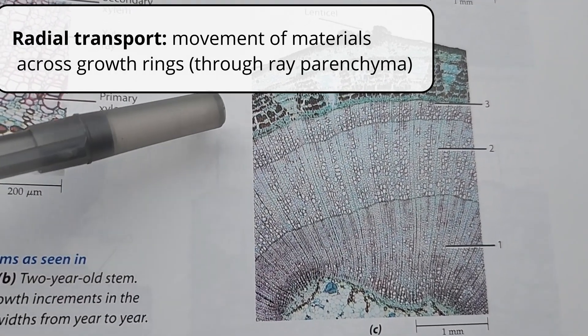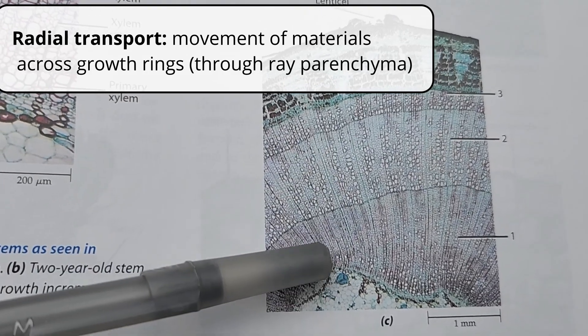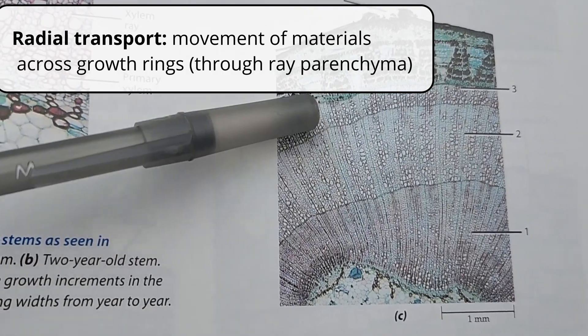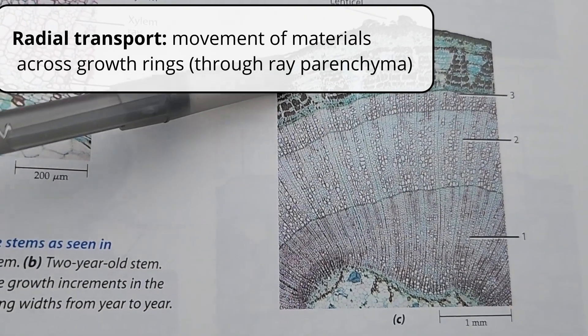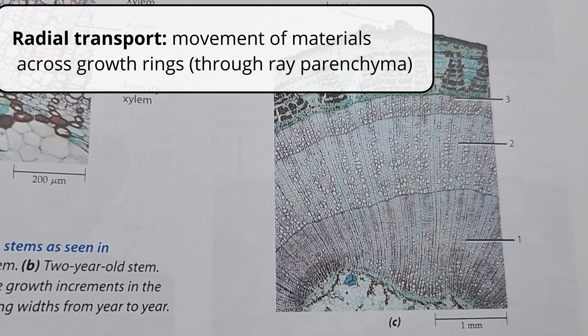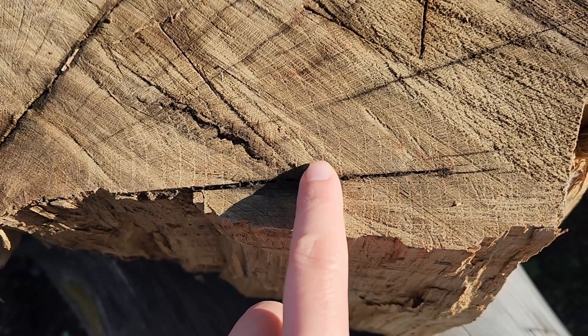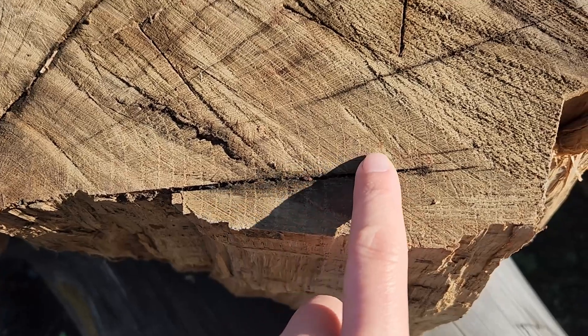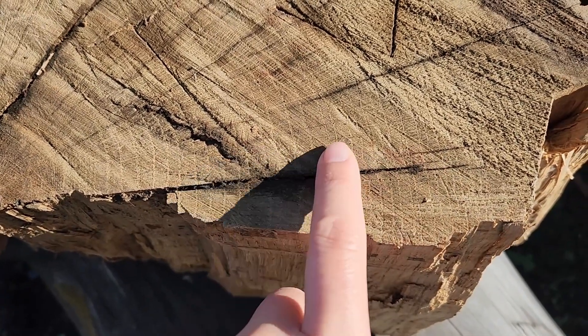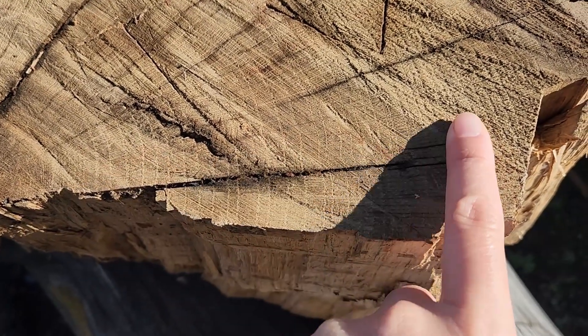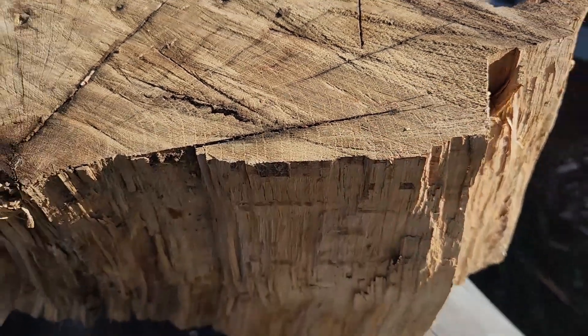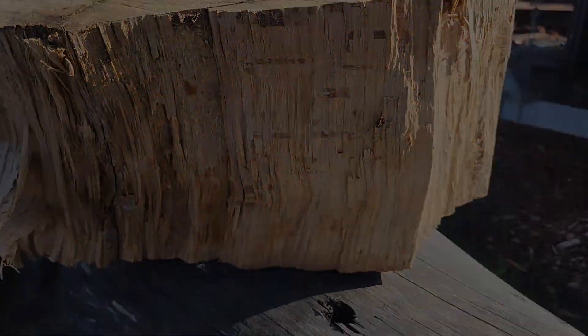They can also move materials through multiple years of growth — from the more inner parts of the tree to the newer parts of the tree. And that's called radial transport. Ray parenchyma, which is found in xylem, is helpful for something like this. If you have trouble remembering, just remember that radial transport occurs via rays, and the rays radiate out from the center of the tree.